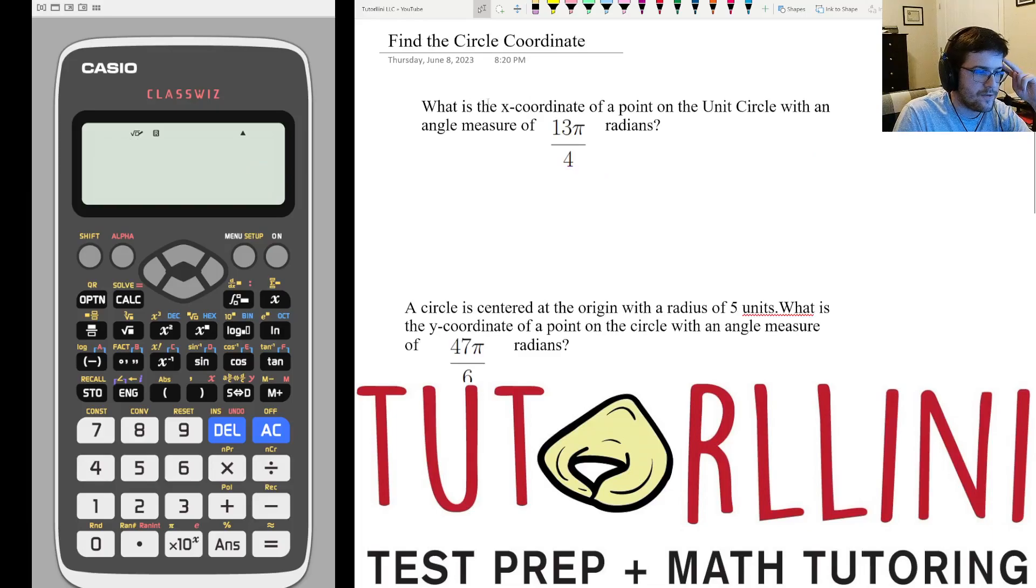Okay, so this one wants us to find the x coordinates of a point on the unit circle. So that means the radius is 1. So if we want to find the x coordinate, we do x equals cosine theta. For this problem, theta is 13 pi over 4.